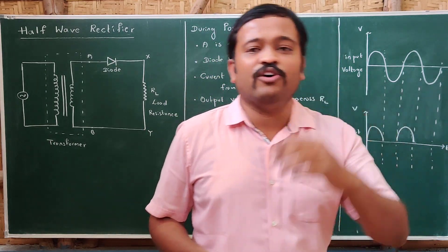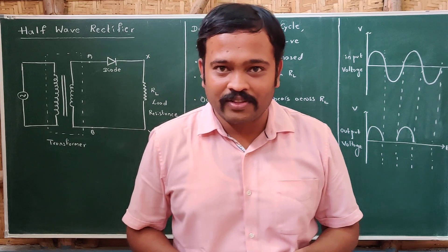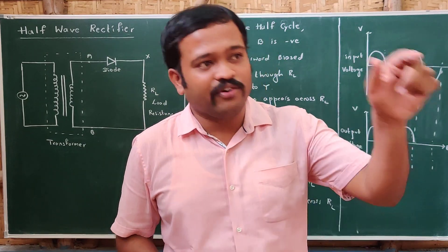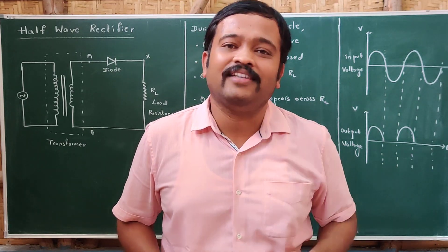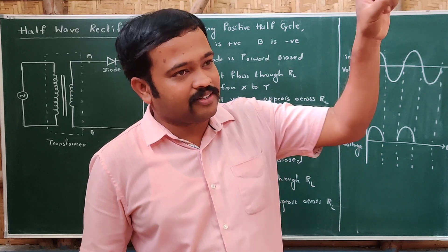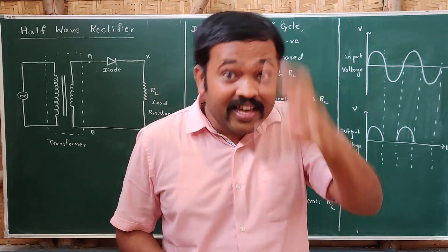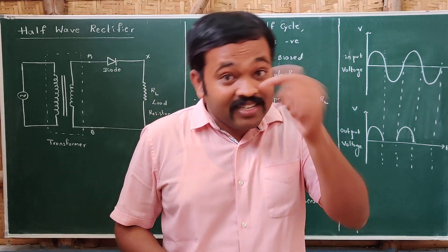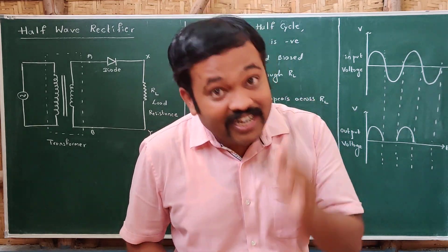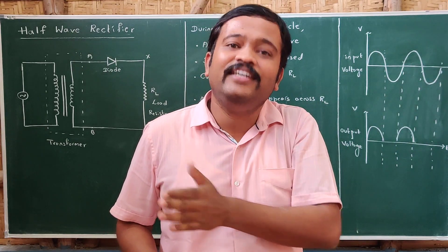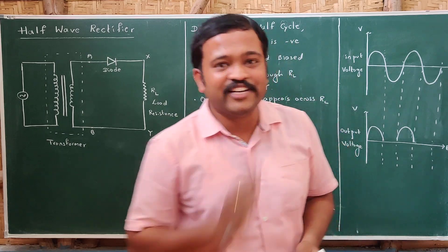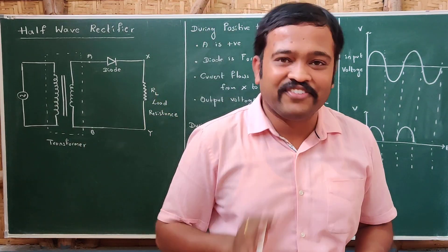When you want to charge a mobile, we need DC current for it. But at our home, AC is available, and there should be something that converts AC into DC. So we connect a mobile charger to a plug, and in that charger there is a box. Inside the box there is a circuit, and we will be understanding what that circuit is. A rectifier is a device which converts AC into DC, and the process is called rectification.